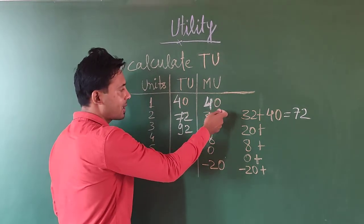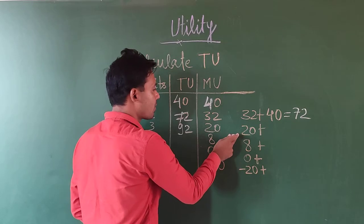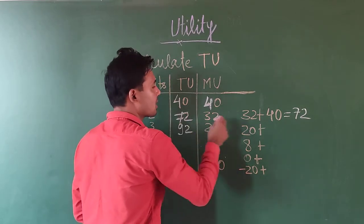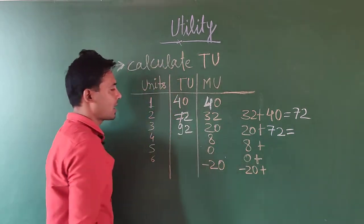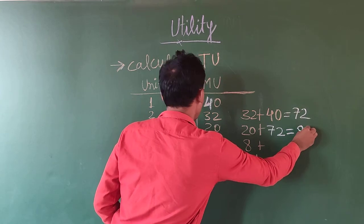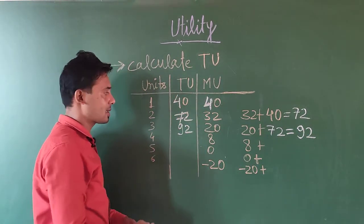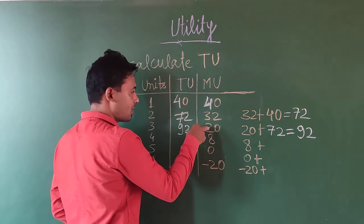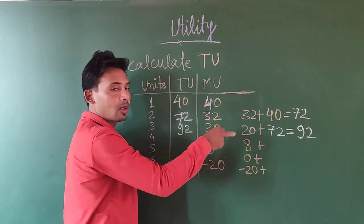We have added this, 40 plus 32. So what should happen here? 20 plus 72, how much will it be? We have 72. This 20 plus 72 is equal to 92.